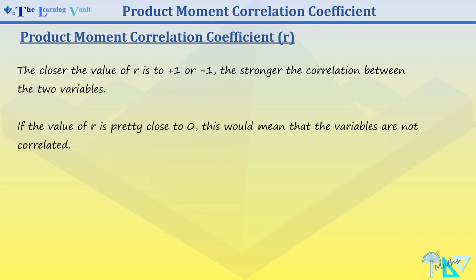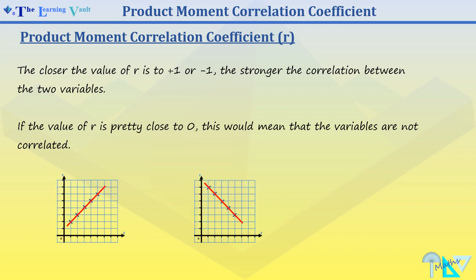The PMCC shows that the closer the value of r is to plus 1 or negative 1, the stronger the correlation between the two variables. If the value of r is close to 0, this means that the variables are not correlated.